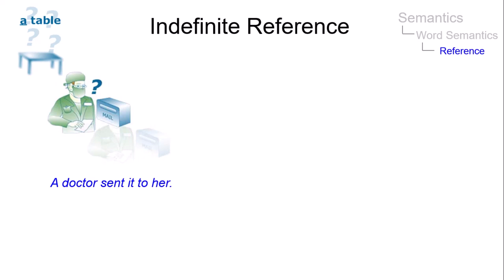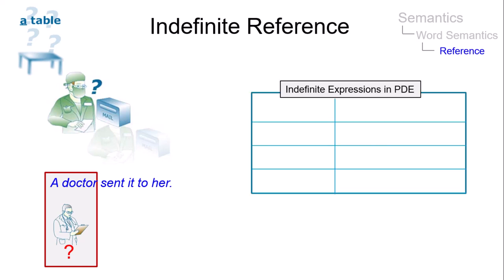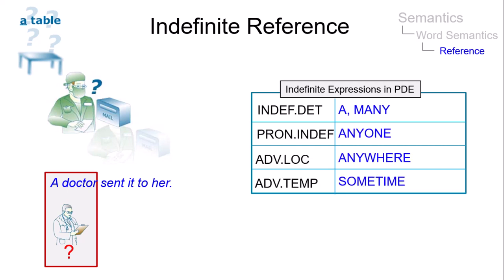In instances of indefinite reference, only the features of the class to which the referent belongs are relevant. The noun phrase 'a doctor' is not necessarily identifiable by either the speaker or the hearer. In fact, to understand the speaker, the hearer does not have to know which doctor is involved. Indefiniteness is signaled in present-day English by indefinite determiners, indefinite pronouns, and certain locative and temporal adverbs.